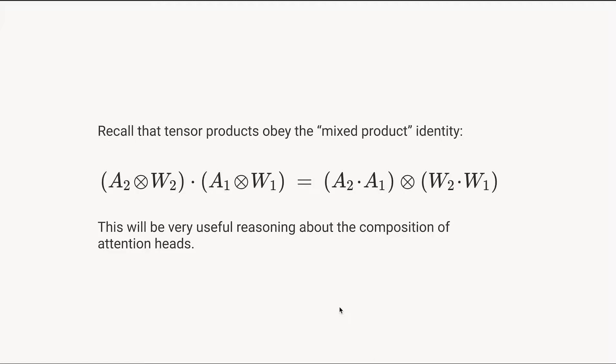And we're going to take advantage of this really nice property. When we have tensor products, and if you're not comfortable with tensor products, make sure you watch the video on the theory of one layer attention heads where we talk about these. But when we have tensor products like this, the items on one side of the tensor product multiply together. This is called the mixed product identity.